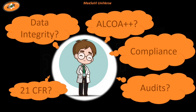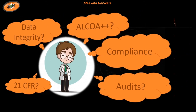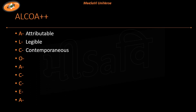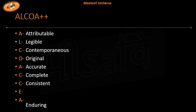Data integrity can be defined by ALCOA++. By following ALCOA++ principles, I can know whether my particular data follows data integrity or not. So what is ALCOA++? A stands for Attributable, L stands for Legible, C stands for Contemporaneous, O for Original. Then the plus-plus parameters: A stands for Accurate, C stands for Complete, another C is Consistent, E stands for Enduring, and the last A stands for Available.